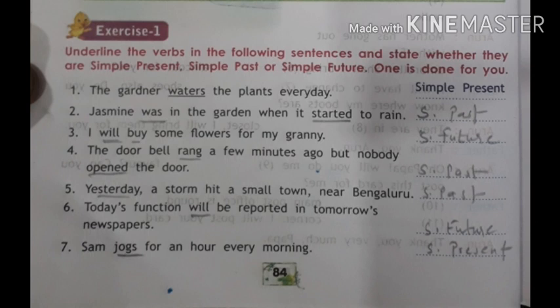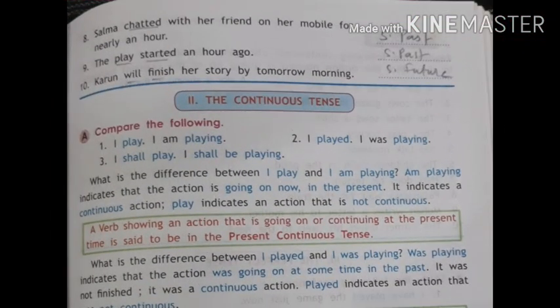Number five: 'Yesterday a storm hit a small town near Bengaluru.' Here 'yesterday' shows the past tense — write simple past. Number six: 'Today's function will be reported in tomorrow's newspaper.' 'Will' shows the future tense — write simple future. Seven: 'Sana jokes for an hour every morning.' Here 'jokes' shows continuity or a habitual activity, so write simple present tense.